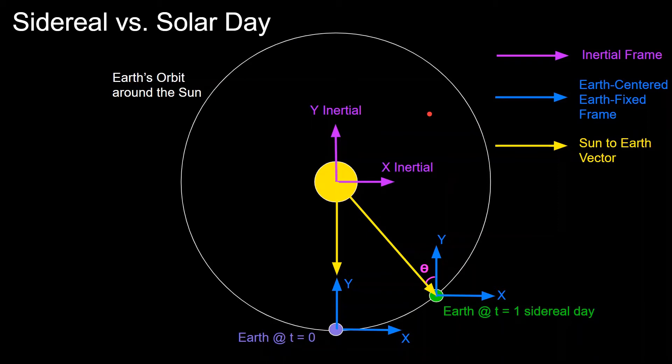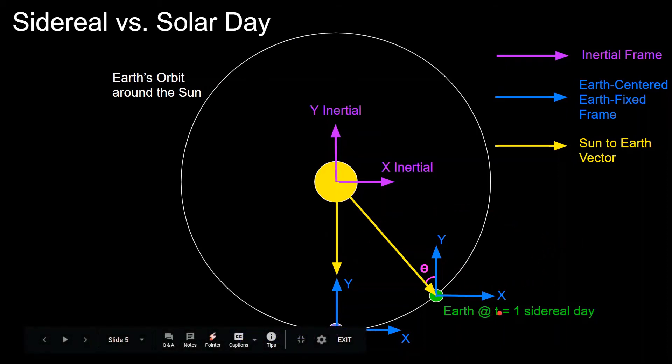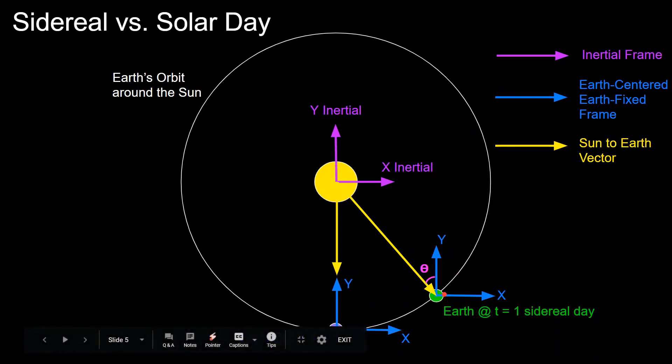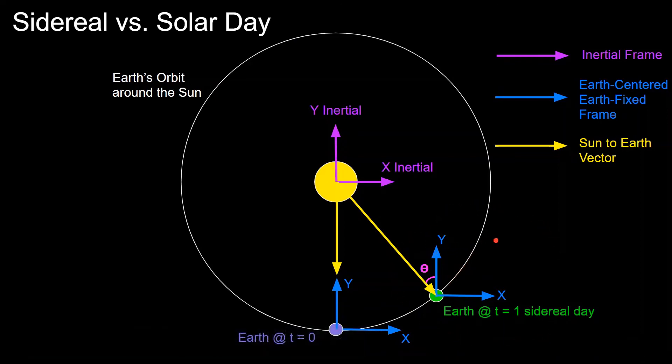We start with Earth at time equals zero, some arbitrary time, where its Earth-centered Earth-fixed frame is aligned with the inertial frame, as can be seen in the diagram. After one sidereal day, Earth at time equals one sidereal day, the Earth has done one rotation, 360 degrees, with respect to the inertial frame. The Earth has moved this far in its orbit and it's done 360 degrees of rotation. So its body-fixed frame is once again aligned with the inertial frame.